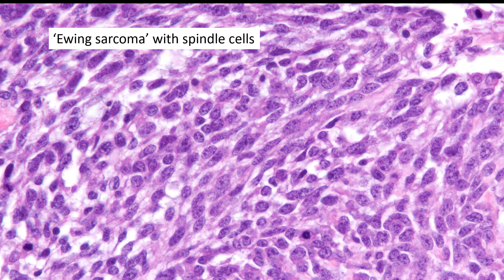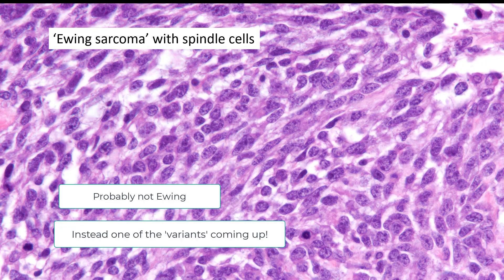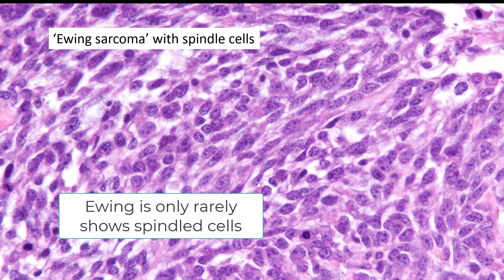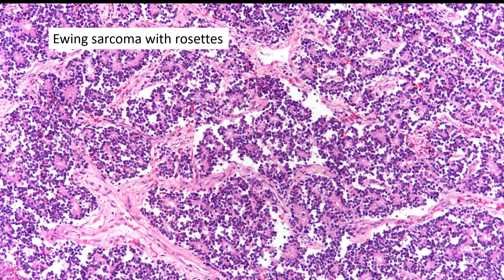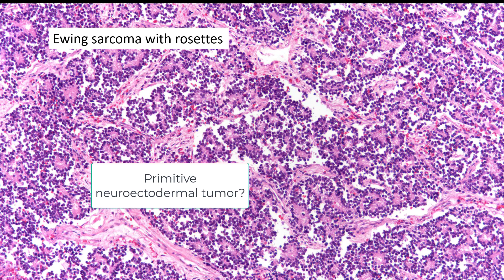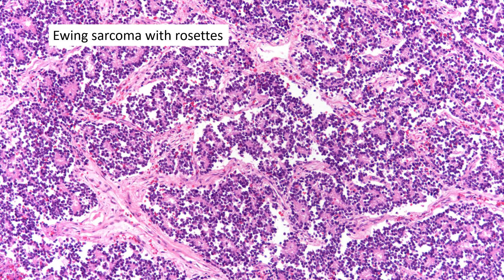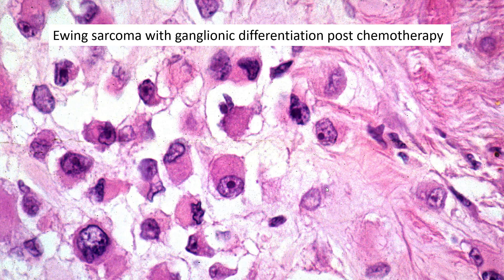A touch of history: in the 1990s, we called spindle-cell variants Ewing sarcoma with spindle cells, but today these would likely not be classified as Ewing's with molecular genetics. Classic Ewing's is rarely spindled. Ewing's forming rosettes used to be called primitive neuroectodermal tumor, but today we classify it as Ewing's. You occasionally see rosettes pre-treatment, but more often post-treatment as differentiation following therapy — including the ultimate form: ganglion cells with big prominent nucleoli and abundant eosinophilic cytoplasm.